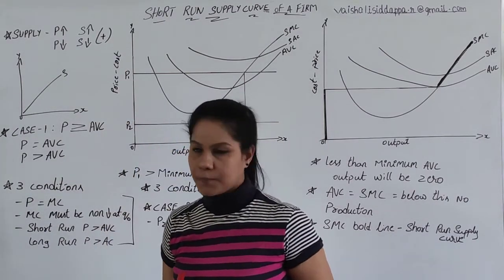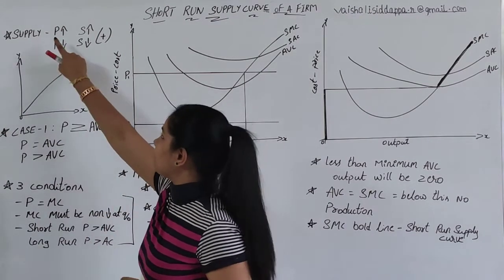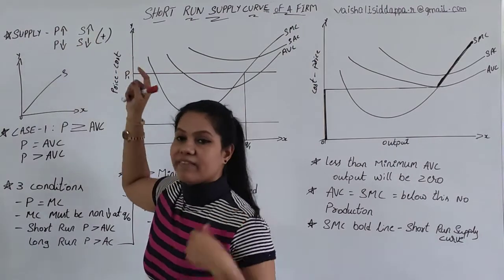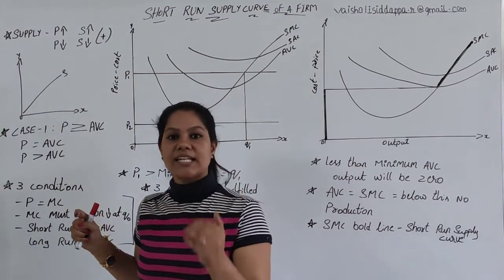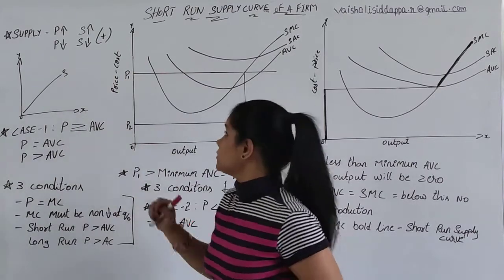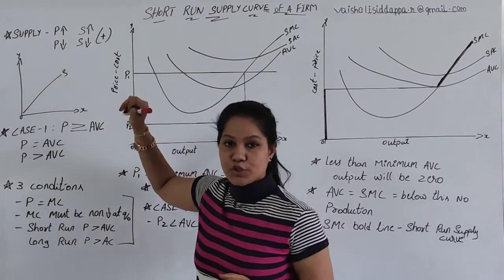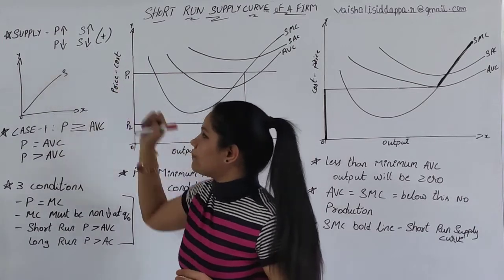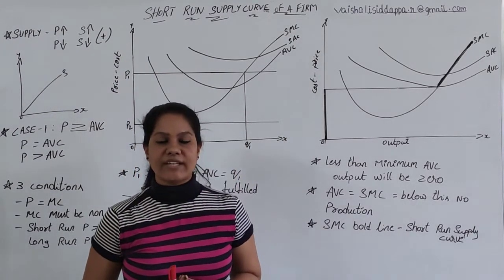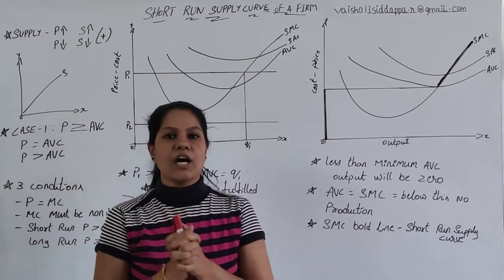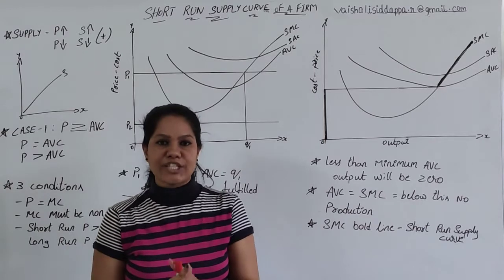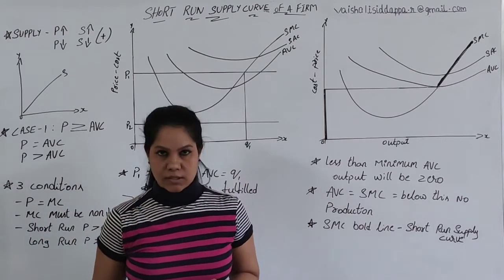What exactly is the behavioral relationship between price and supply? If price is increasing, supply will also increase. If price decreases, supply is also going to decrease. So both variables are moving in the same direction, meaning the functional relationship between the two variables is positive.